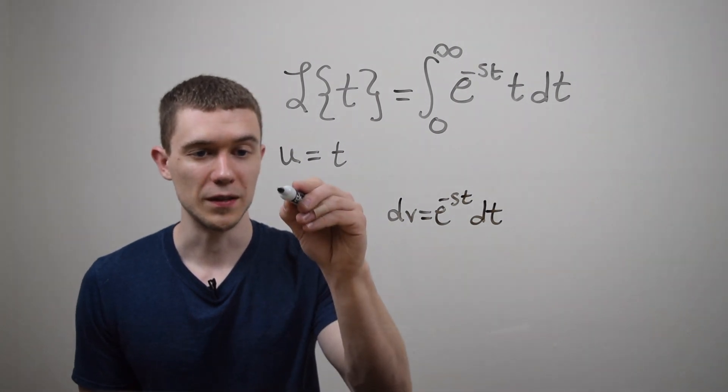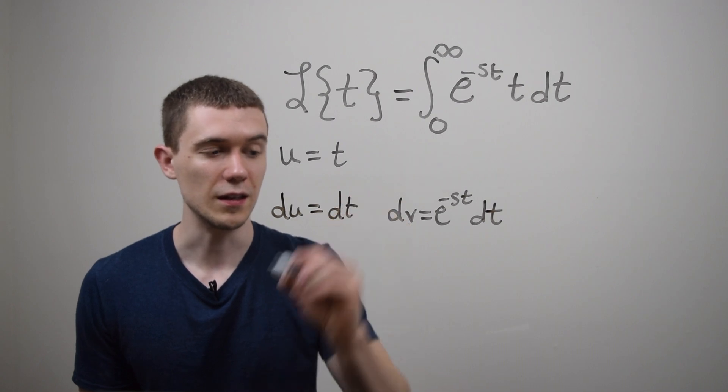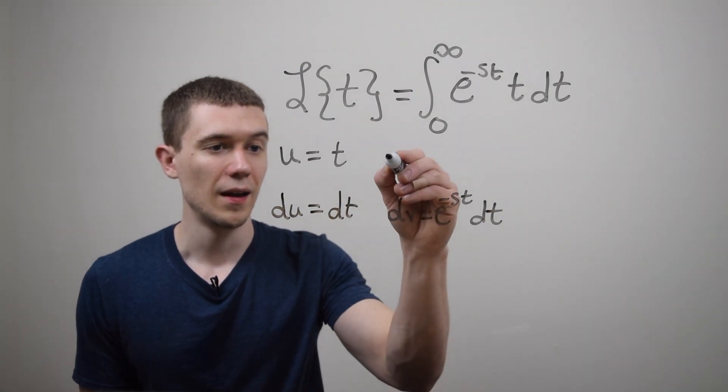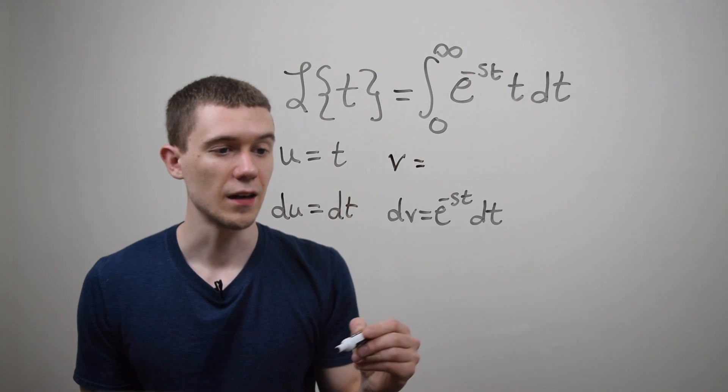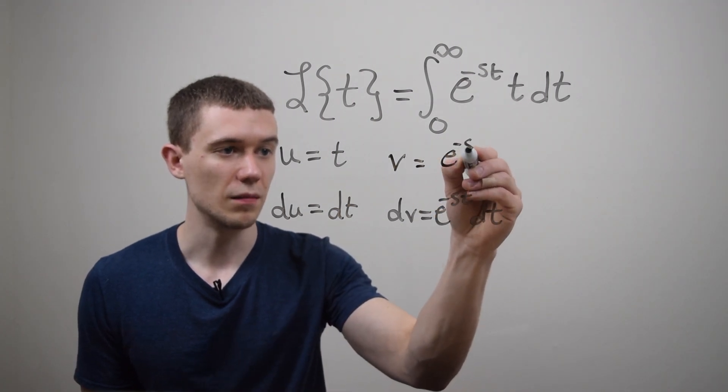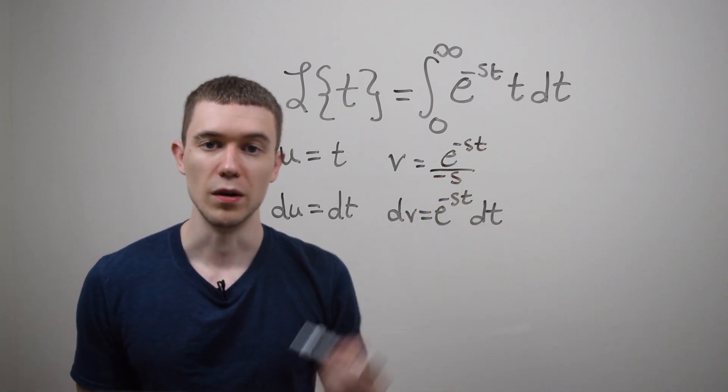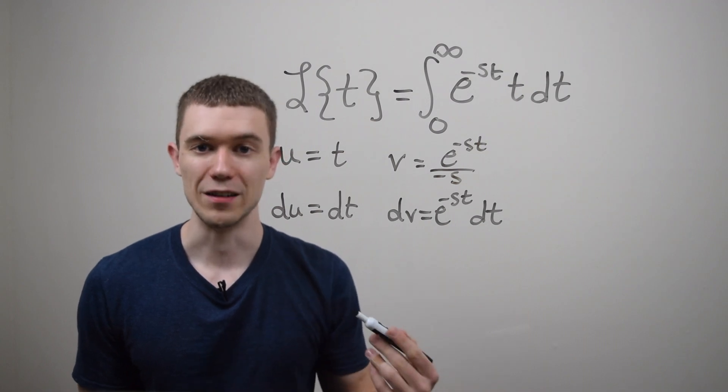Well this means that du is going to be the derivative of t which in this case is just dt and v is the anti-derivative of dv that'll be e to the minus st over negative s. Remember I have to divide by the derivative of the exponent when I'm integrating e to a constant.